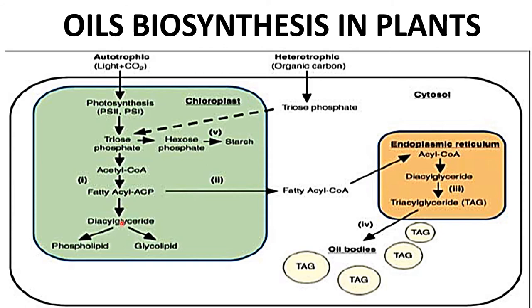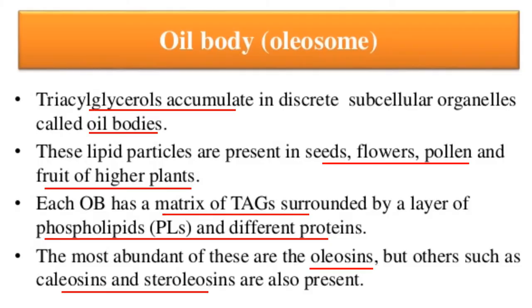These triacylglycerides accumulate in the form of oil bodies in the cytosol. Alternatively, the fatty acyl can be converted into diacylglyceride in the chloroplast itself and then converted into either phospholipid or glycolipid, which helps in membrane preparation.